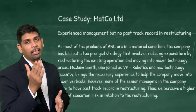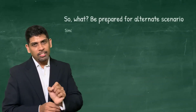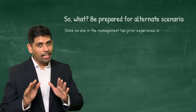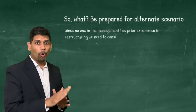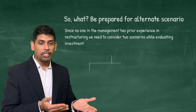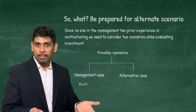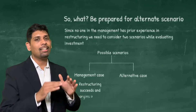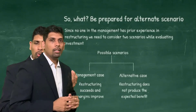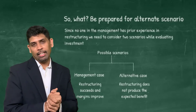For an investor, this means: management is giving guidance on margin improvement by relying on restructuring, but my assessment shows nobody has experience in restructuring. There is a possibility this may not work out. So I'm going to consider an alternative scenario beyond management guidance — what if they mess up, incur restructuring costs, and still see no margin improvement? This allows me to present a picture that tells the investor about the risk involved.